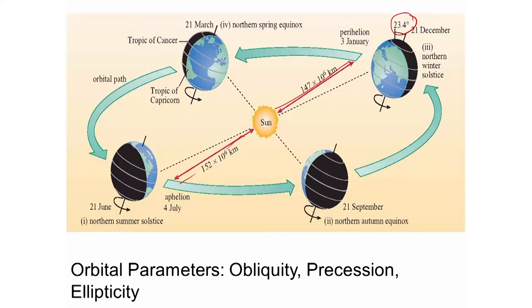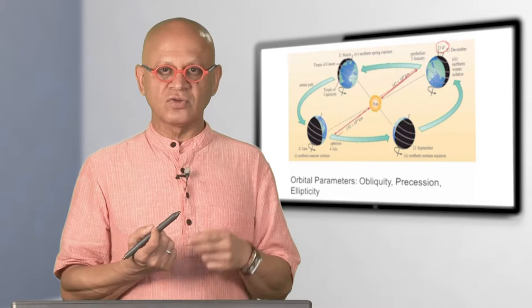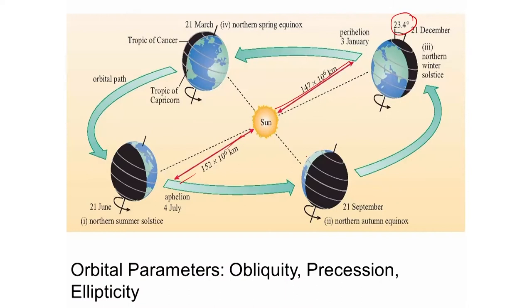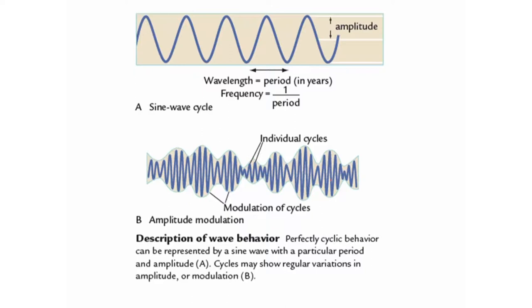Because we are closer to the sun during northern winter and farther in summer, both seasons are slightly moderated. At equinoxes, the sun is over the equator and every latitude should have nearly equal day and night—close to 12 hours—though refraction through the atmosphere means it is not exactly 12 hours at higher latitudes.